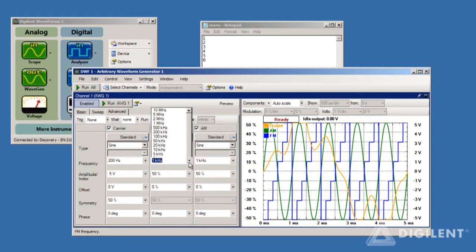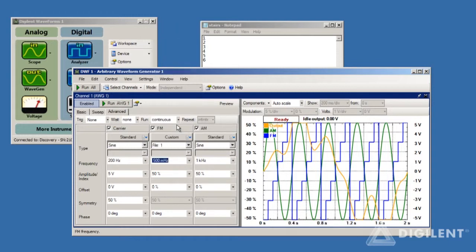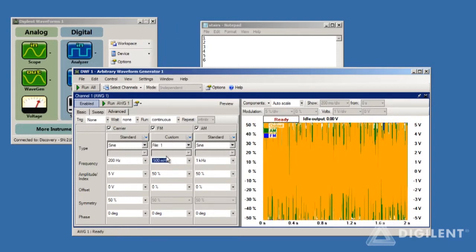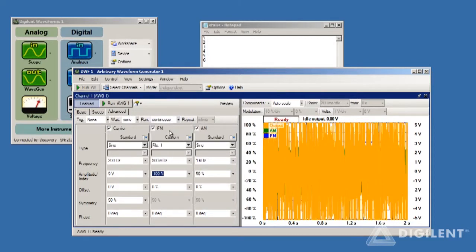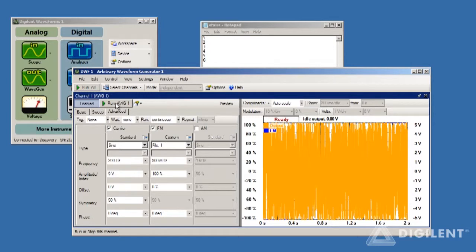Now under the FM column, set the baseband frequency to something low, say 500 mHz, or half a cycle per second. That means our scales will play over the course of 2 seconds. Also set the FM amplitude index to 100%. Make sure you deselect amplitude modulation. Now just click on Run AWG1 to hear your scales.